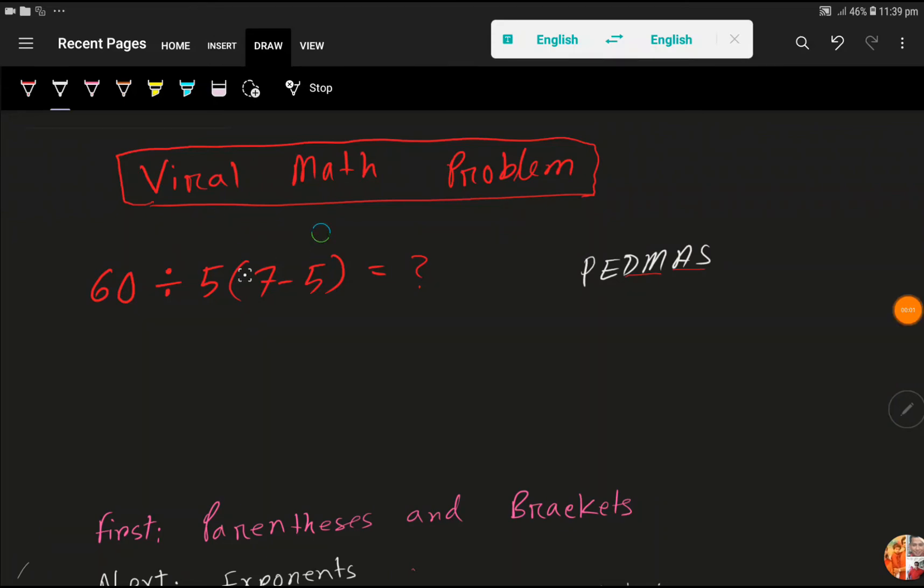Well, viral math problem. Here 60 divided by 5, parenthesis 7 minus 5. So what will be the answer?